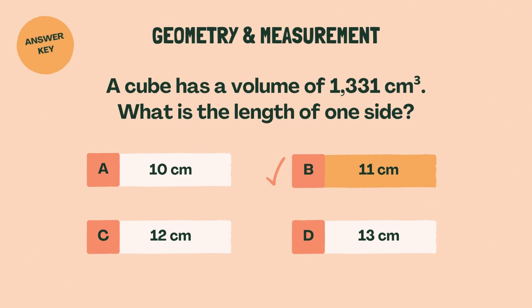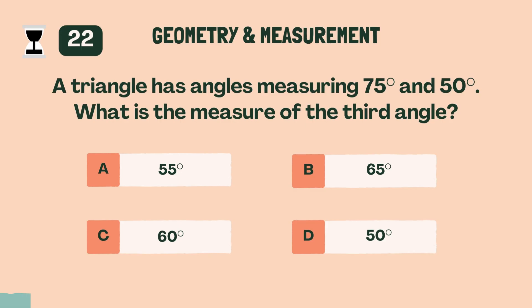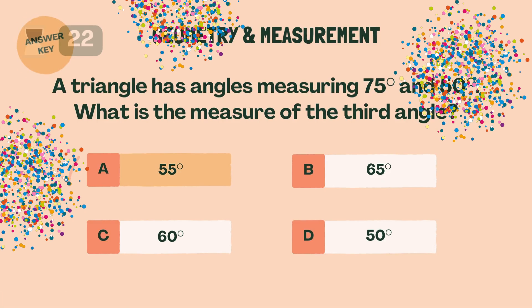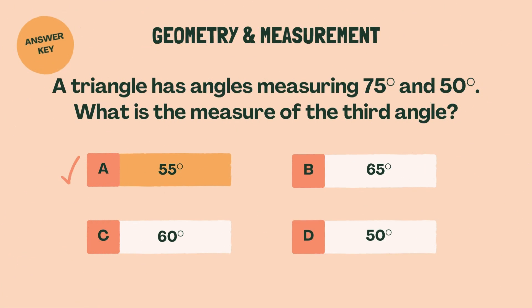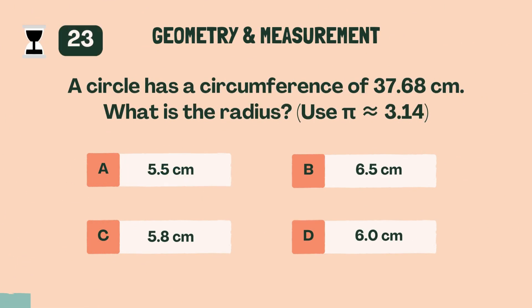A triangle has angles measuring 75 degrees and 50 degrees. What is the measure of the third angle? A, 55 degrees.